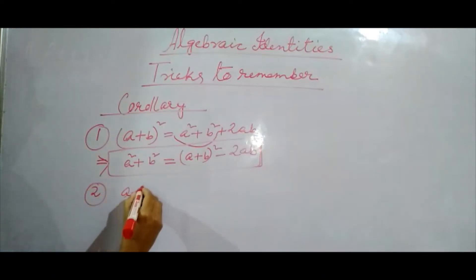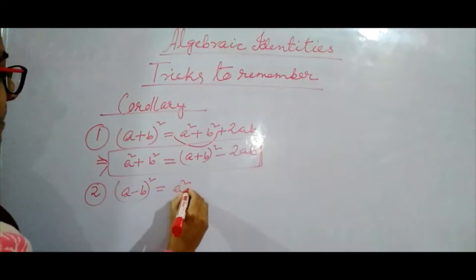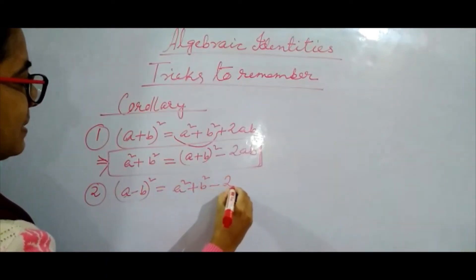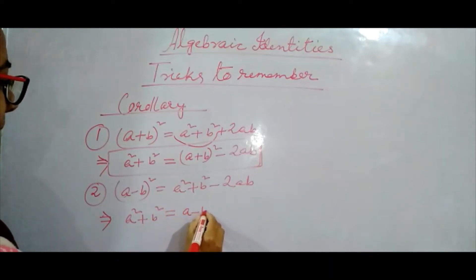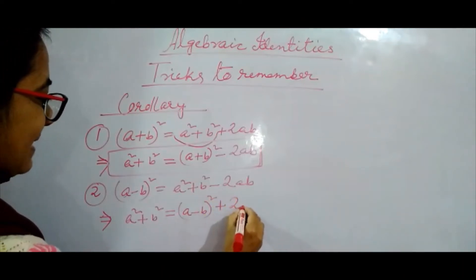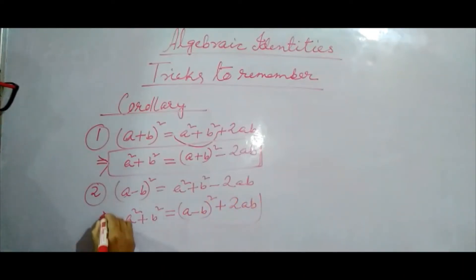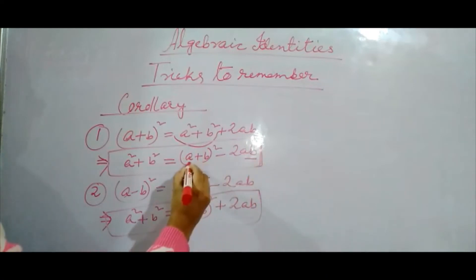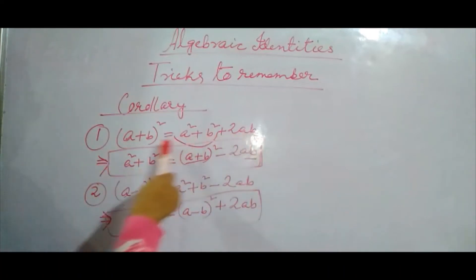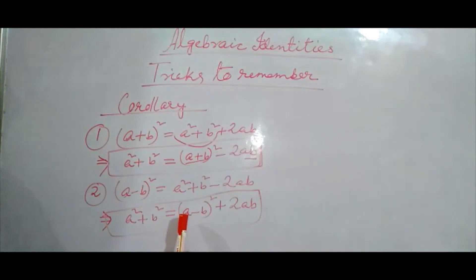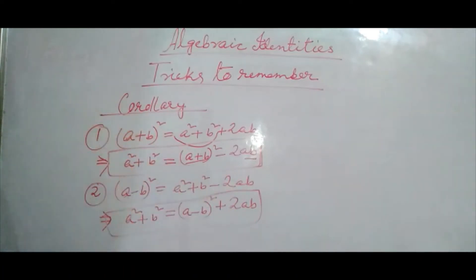Also we know A minus B whole square is equal to A square plus B square minus 2AB. From here A square plus B square is equal to A minus B whole square plus 2AB. This is also one corollary. So whenever A plus B and AB values are given and you are asked to find A square plus B square, use the first corollary. If A minus B and AB are given, use this formula.